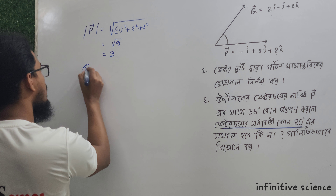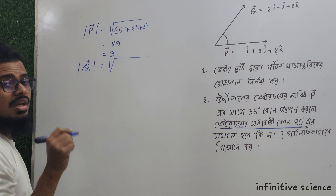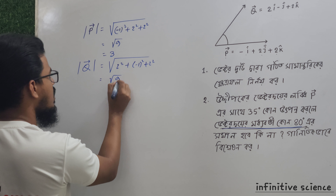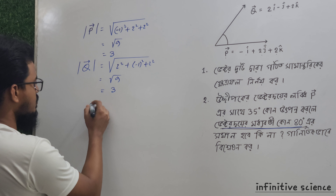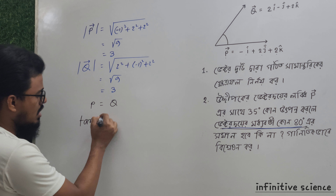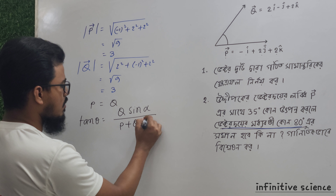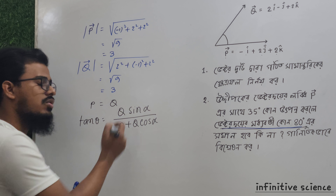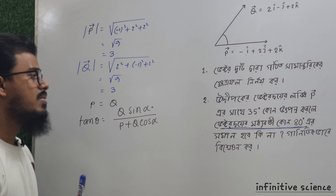So P equals three, Q equals three. Now we have the formula: Q sine alpha divided by P plus Q cosine alpha. Using theta equal to alpha, the angle setup — we want to create a relation using the angle theta and alpha. The question involves a 35 degree angle and we need to set up the vector angle formula.